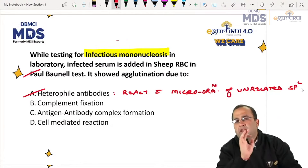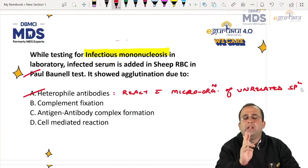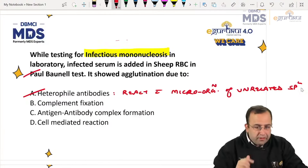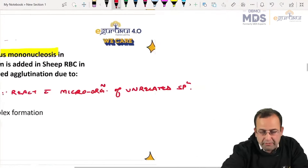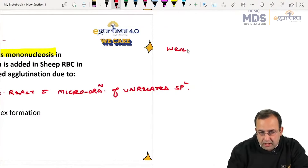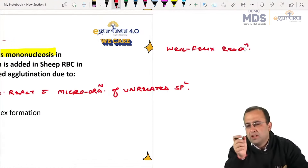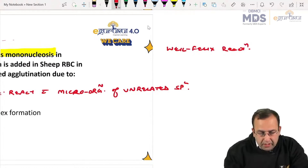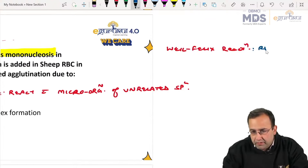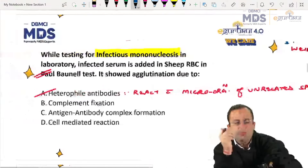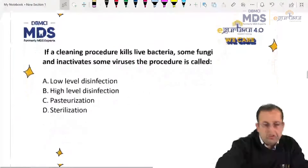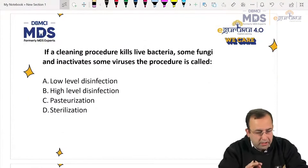We have to remember two main heterophile antibody tests: the first is the Paul Bunnell test, used for infectious mononucleosis; the next is Weil Felix reaction. In Weil Felix, the Proteus strains OX19 and OX2 react with serum of patients with rickettsia, so Weil Felix reaction is used for diagnosis of rickettsial diseases.